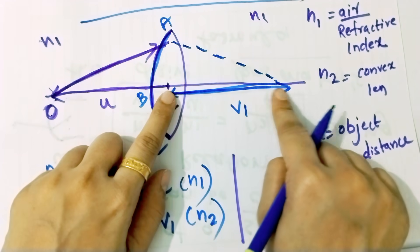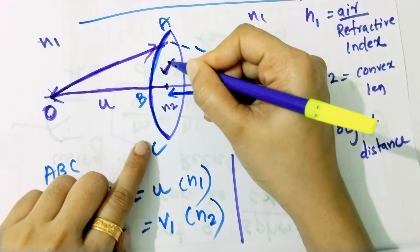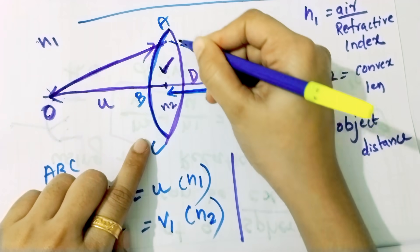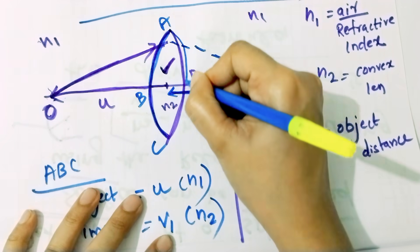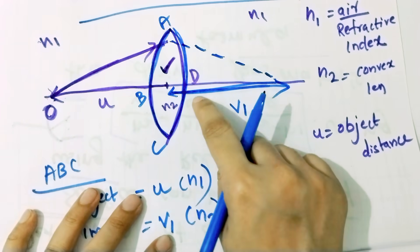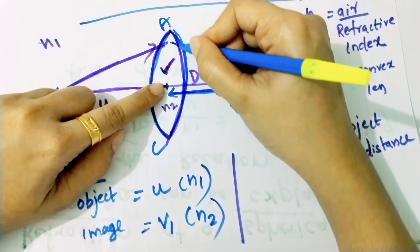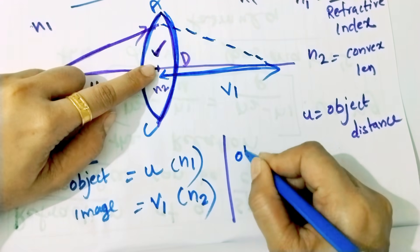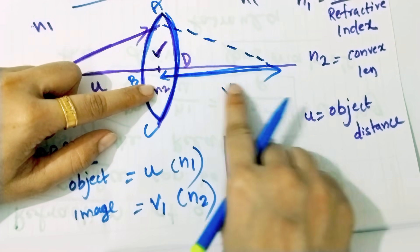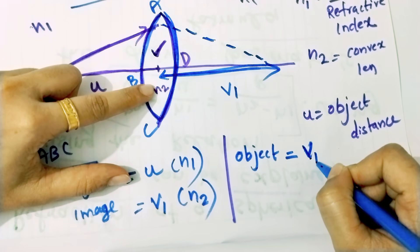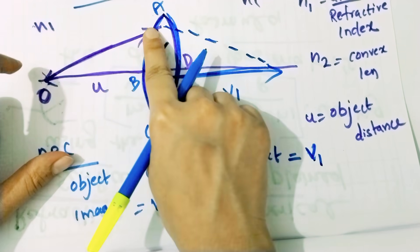This image is at a V1 distance from the first surface. The image formed is called ADC. This is a V1 surface. If you consider the ABC object, it is not on the V1 surface — the object ABC acts as the object for the first surface, and the image is at V1.